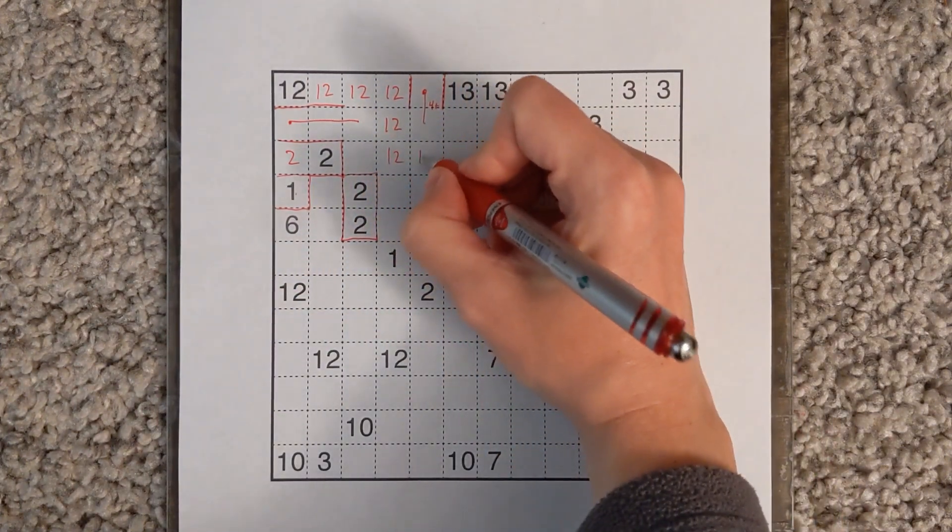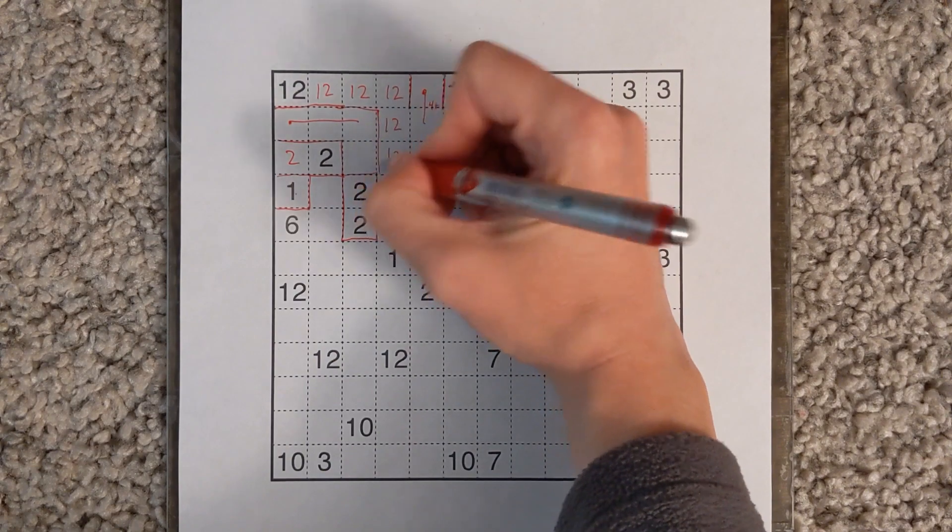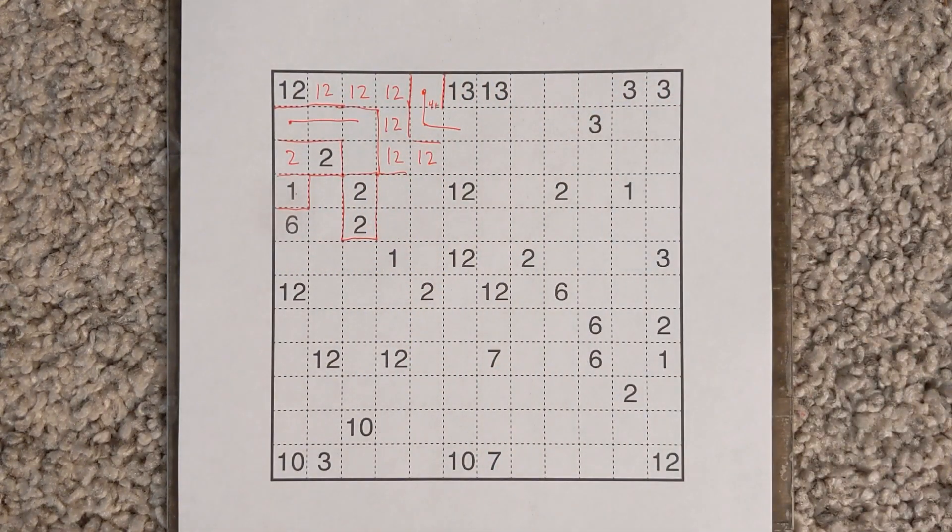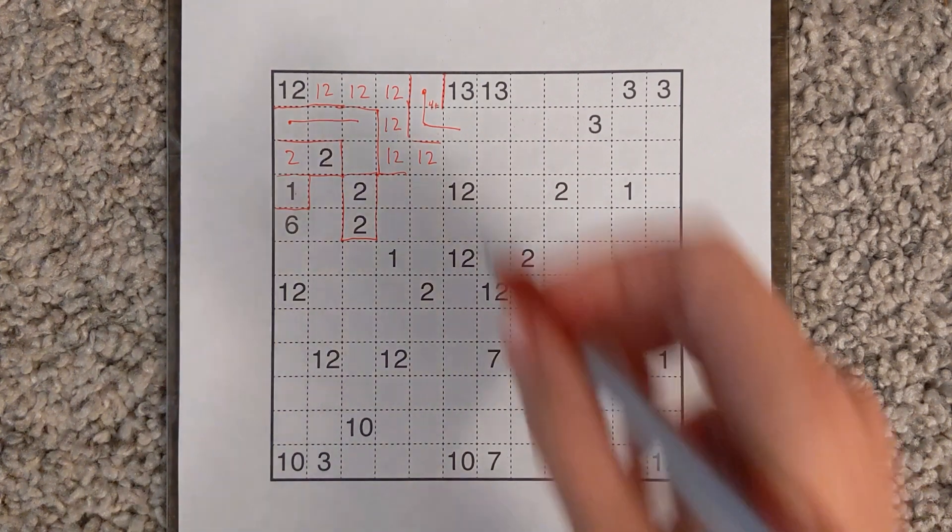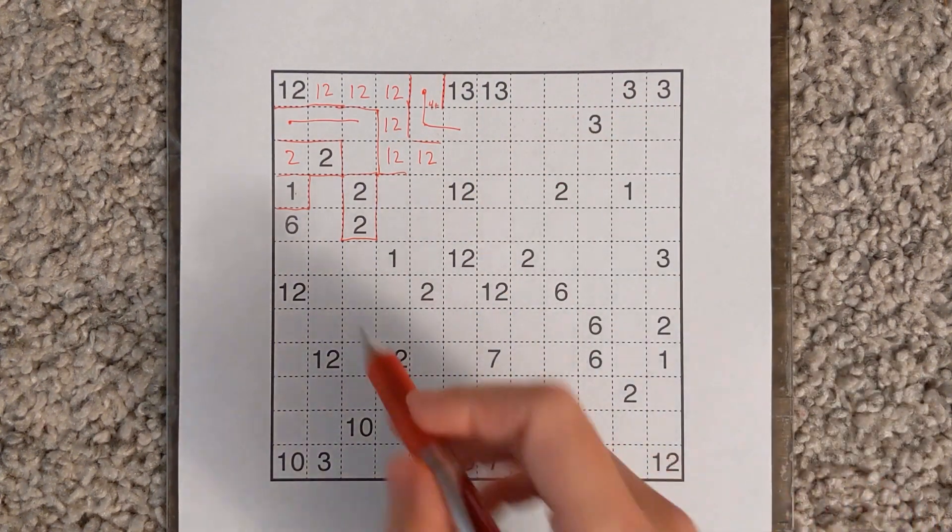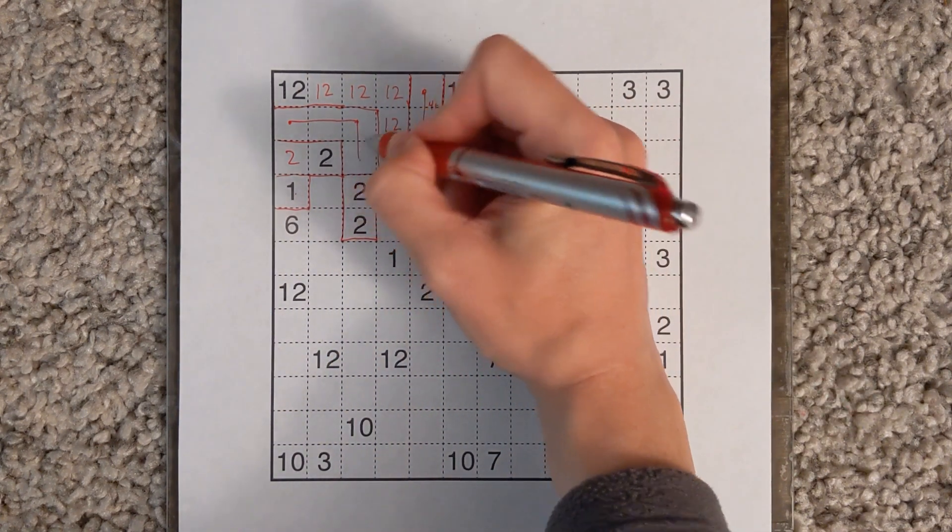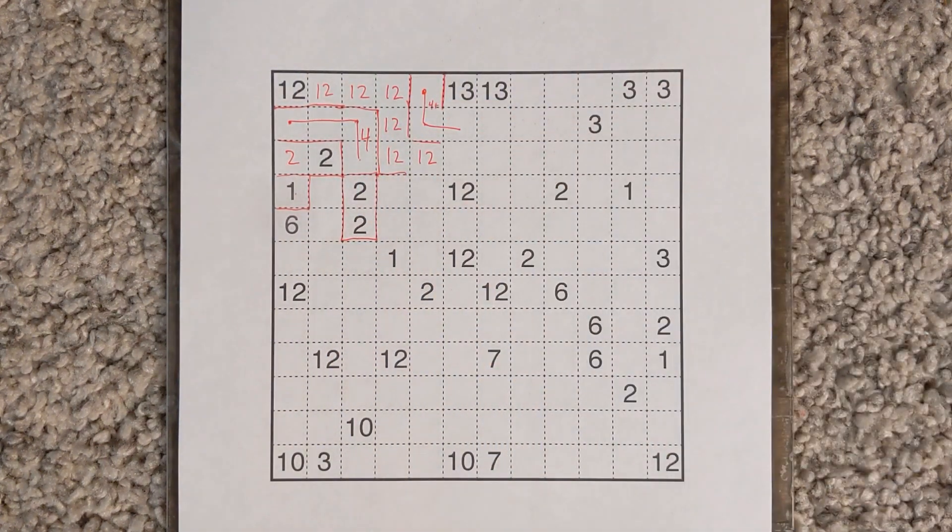And so we get a case where 12 starts to build in like this, but this 4 has to also keep extending, 4 or larger has to keep extending. This hidden shape now is in three cells, but has another empty cell it's got to connect with, so that's for sure a 4.